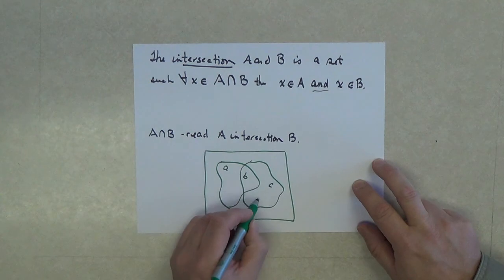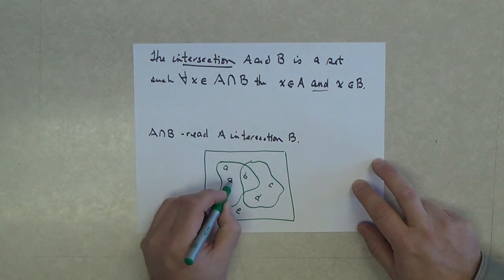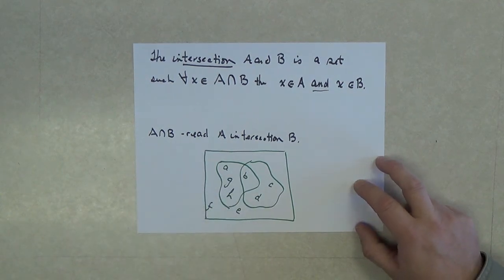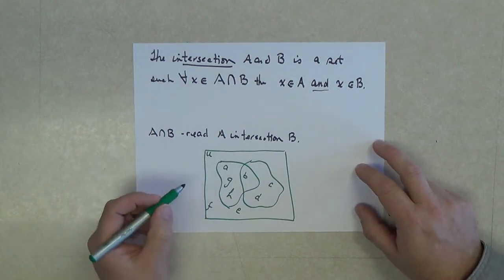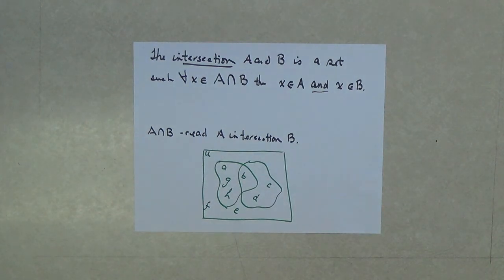Let's see, A, B, C, D, E, F, G, H. We have this universe that are the letters A through H.